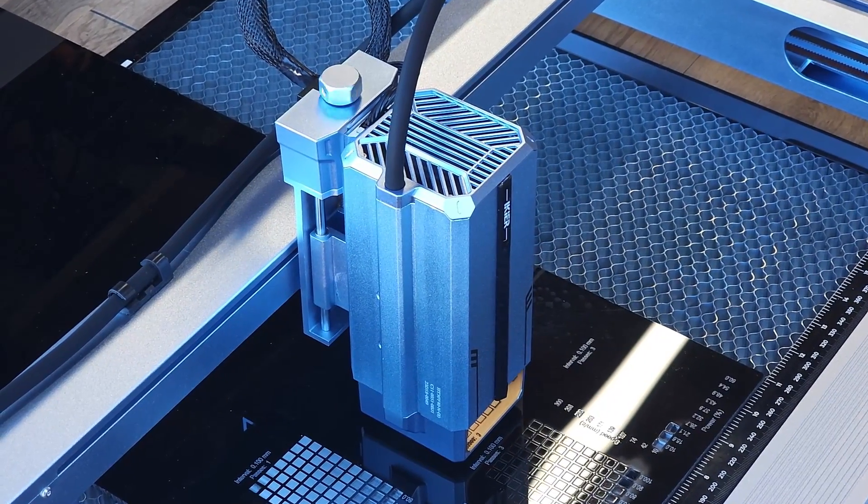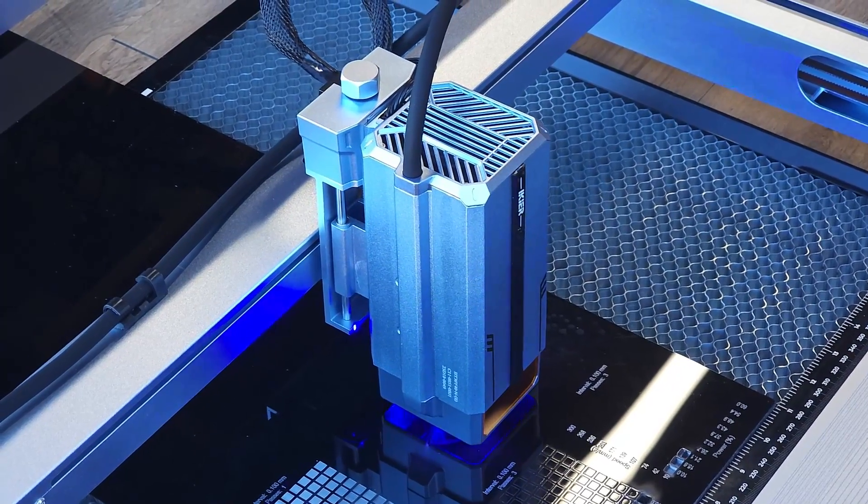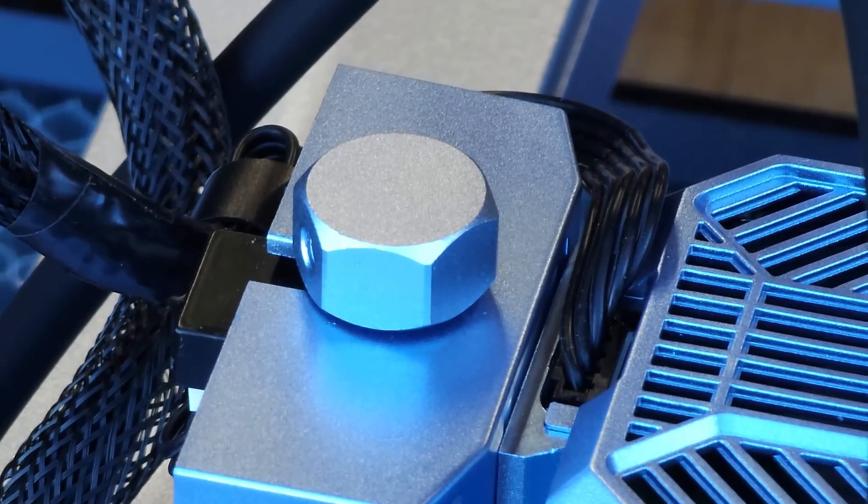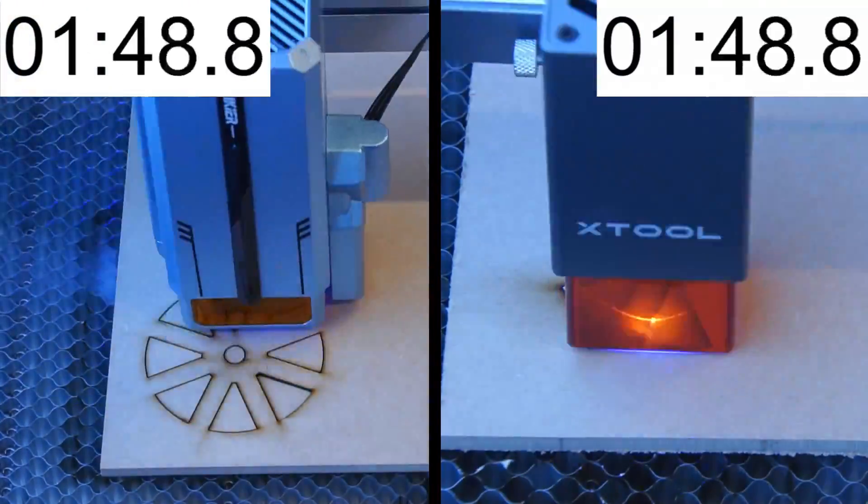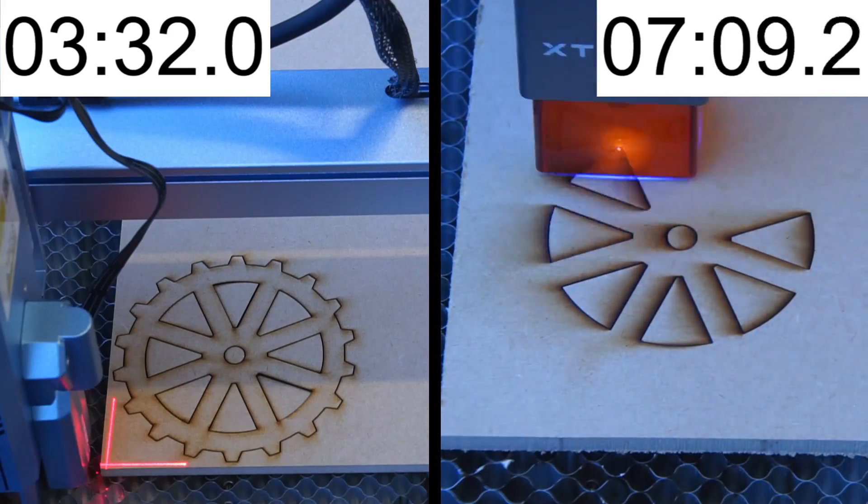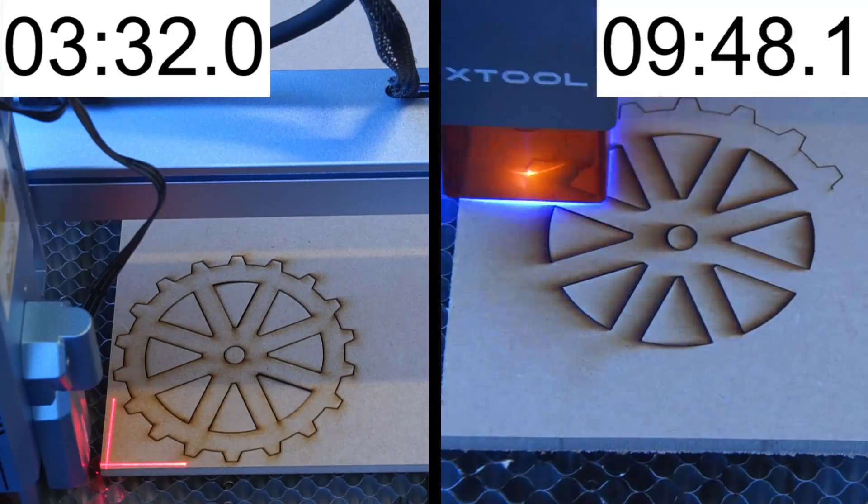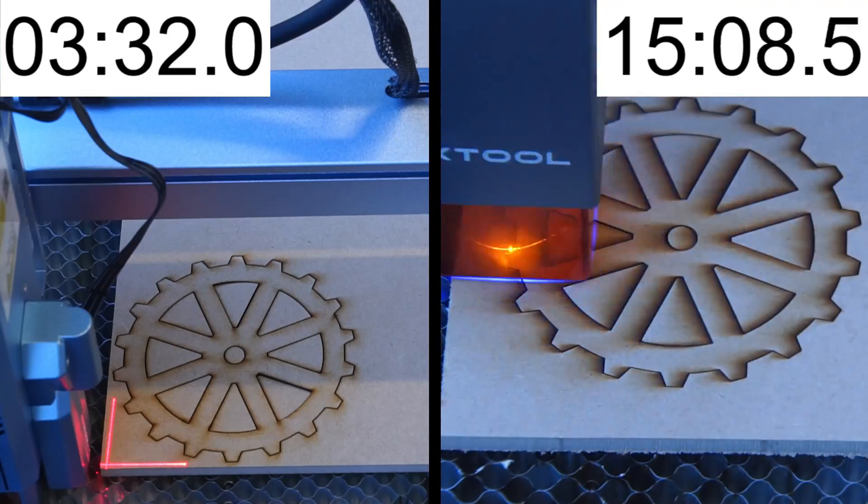It has a Z axis motor which gives you one click auto focusing and the ability to drop the laser down with each pass yielding faster and deeper cuts. Compared to other laser machines on the market it's not the cheapest. However when you compare the performance to cheaper options it's easy to see why the IKEA K1 costs more.